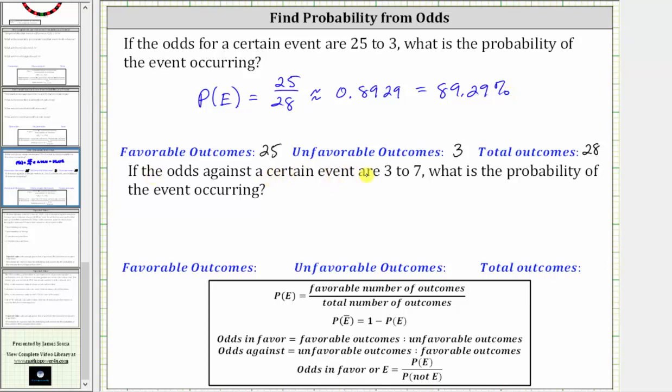Next, if the odds against a certain event are three to seven, what is the probability of the event occurring?